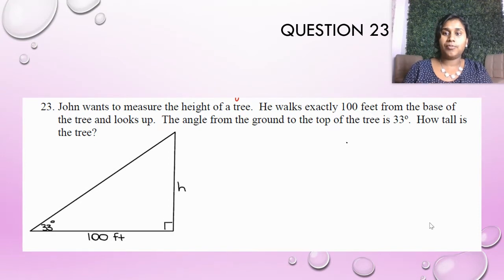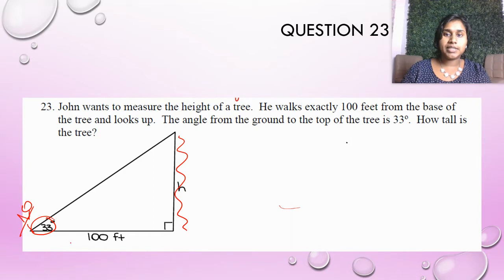So the first thing I do is I draw it out. There's John standing out here somewhere. There's Mr. John standing over here. There's that 33 degree angle. Here's my tree and here is that distance 100 feet that he just walked.